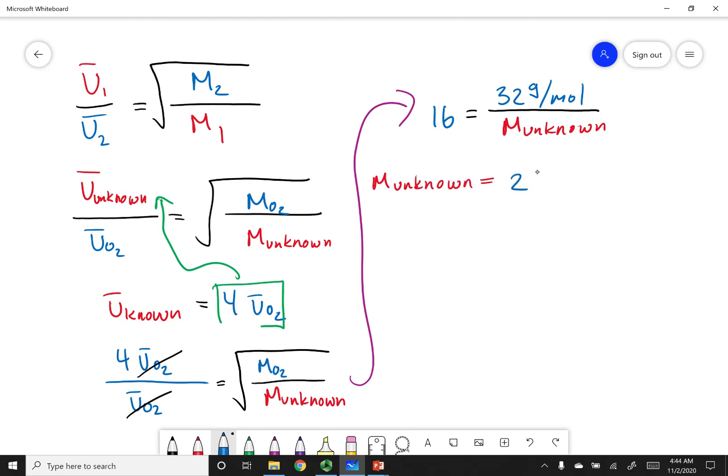So what's really important when using Graham's law is that you guys make sure that you're putting your variables in the correct place. And remember, the velocity of gas 1 goes on top, its molar mass goes on the bottom. And the converse is true for gas 2. The velocity goes on the bottom, its molar mass is up on top.